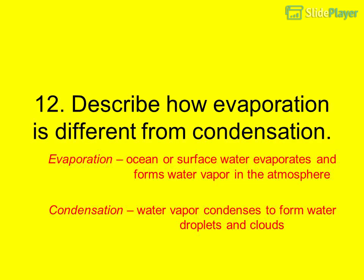Question 12: Describe how evaporation is different from condensation. Ocean or surface water evaporates and forms water vapor in the atmosphere. Question 13: Condensation — water vapor condenses to form water droplets and clouds.